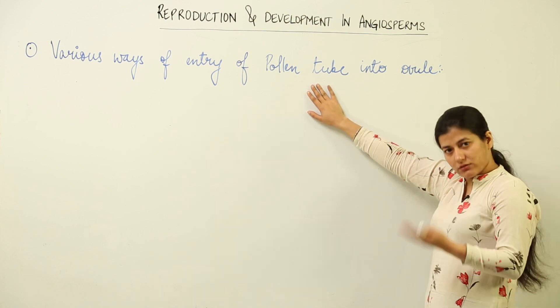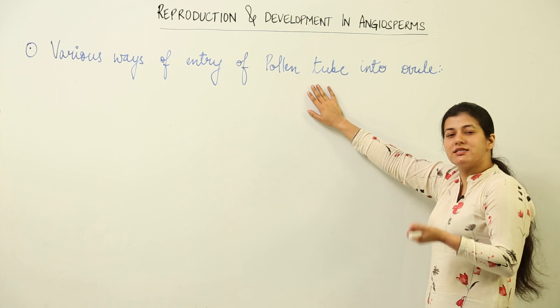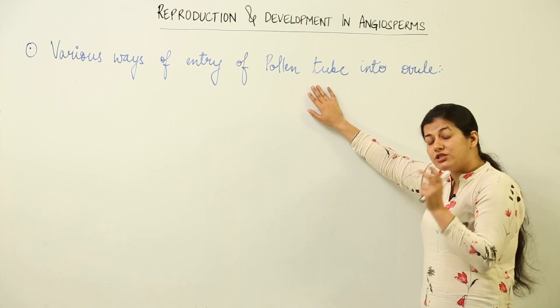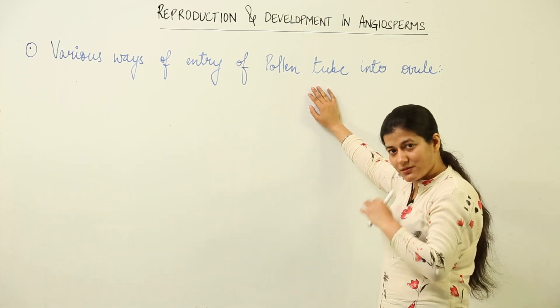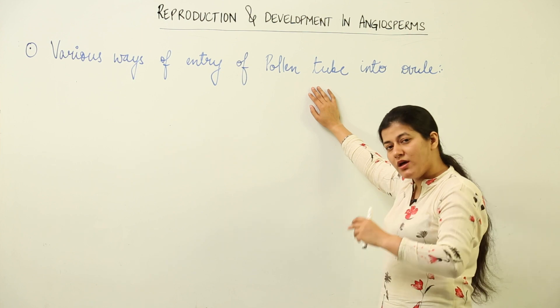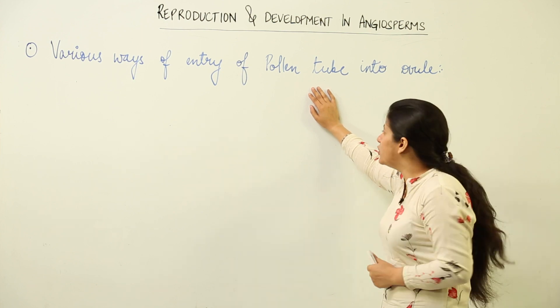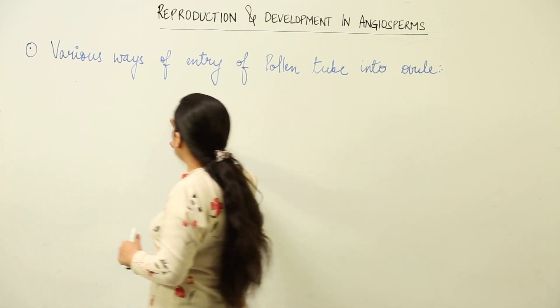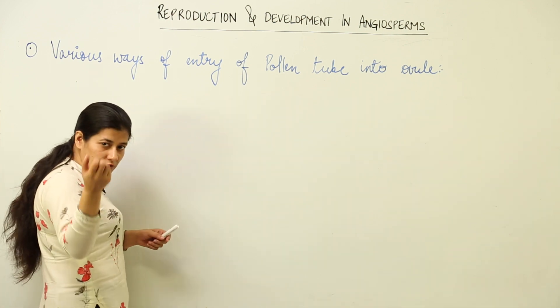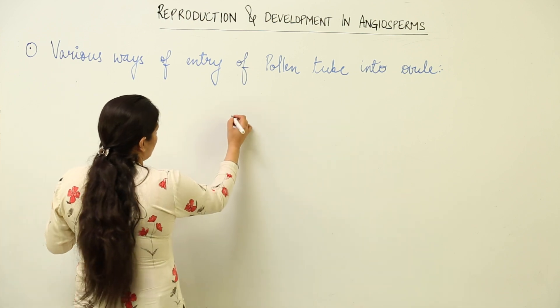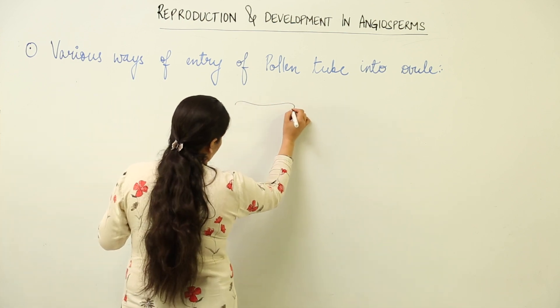We discussed earlier that it is the pollen tube that makes the passage by digesting the style for the pollen grain. In return, the male gametes are given into the embryo sac. Now we are going to trace that in a little bit of detail as much as our syllabus permits.